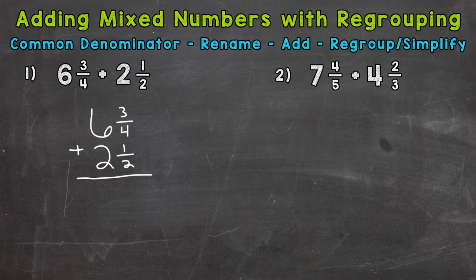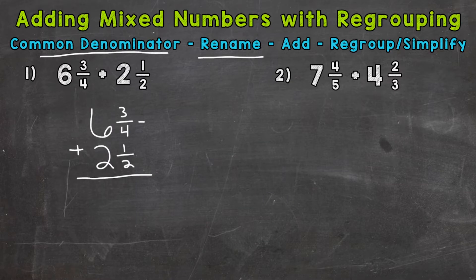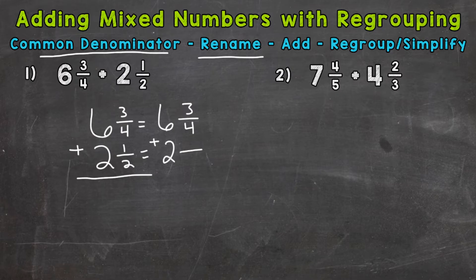We are able to add our fractions if we have a common denominator. In the case of number one, we have three-fourths and a half, so we don't have a common denominator and we need to find one. The least common denominator for a four and a two is going to be four. So that's our common denominator. Now we need to rename.